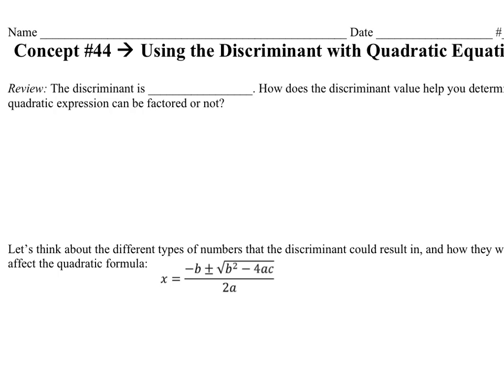There are some things that the discriminant can tell you about your solutions to quadratic equations. Let's review. The discriminant is b squared minus 4ac. Remember we were using that when we were factoring quadratic equations or quadratic expressions before.